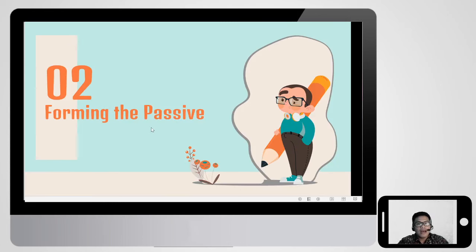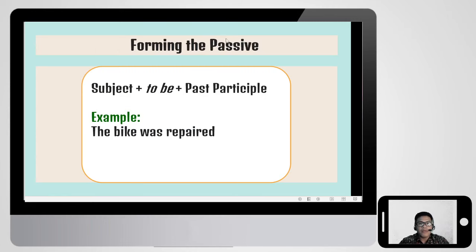How to form the passive? To form the passive, we should have a subject, 'to be', and a past participle — or verb 3. For example, 'the bike was repaired.' Here we have 'the bike' as the subject, 'was' as to be, and 'repaired' as the past participle. So we don't know who repaired the bike.